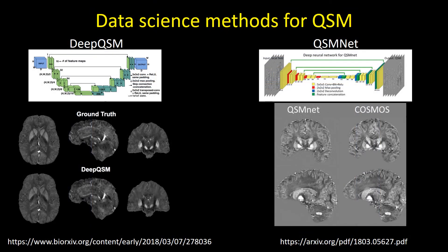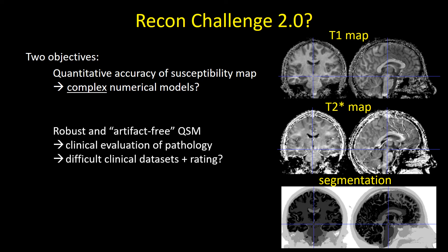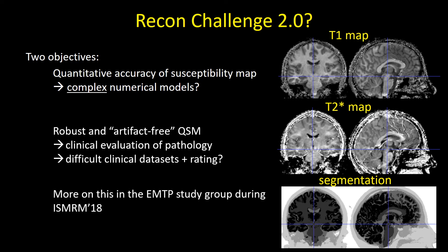Despite these setbacks, we are happy to see that the challenge data and error metrics are being utilized to develop the next generation of QSM algorithms, such as recently proposed machine learning methods. Going forward, we would like to capitalize on this experience and lessons learned to develop a second reconstruction challenge. We are considering building it around realistic and complex numerical models to quantify numerical accuracy, or focusing on clinical utility of susceptibility maps to determine which algorithm provides the most relevant and robust information in difficult clinical cases. We will discuss this further at the upcoming EMTP study group meeting at ISMRM 2018 and look forward to your feedback.